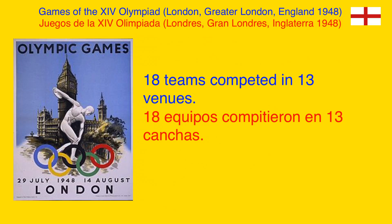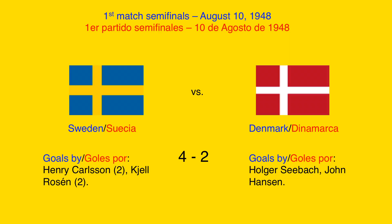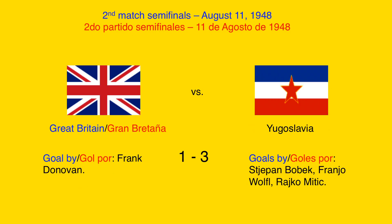In the 14th Olympic Games in London, England, 1948, 18 teams competed in 13 venues in the football tournament. In the first match of the semifinals, Sweden beat Denmark 4-2. In the second match of the semifinals, Great Britain was beaten by Yugoslavia 1-3.